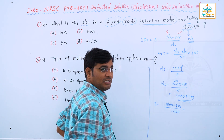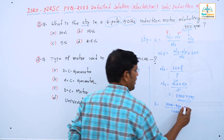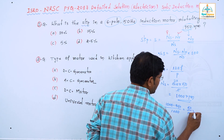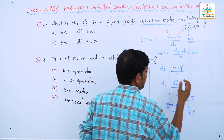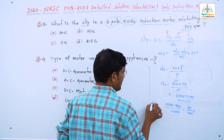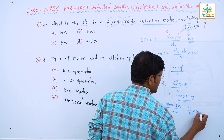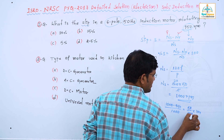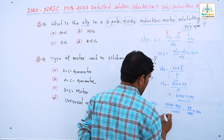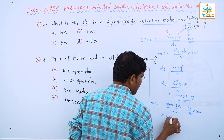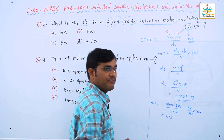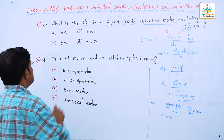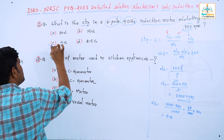1000 minus 950 is 50, so slip is 50 by 1000. Multiplying by 100 for percentage gives 5%. The slip percentage is 5%. Option C is the correct answer.